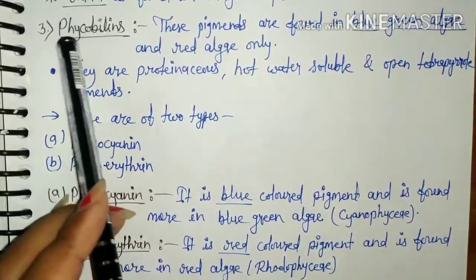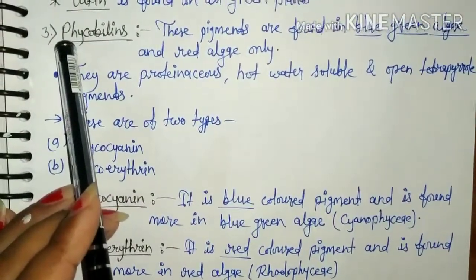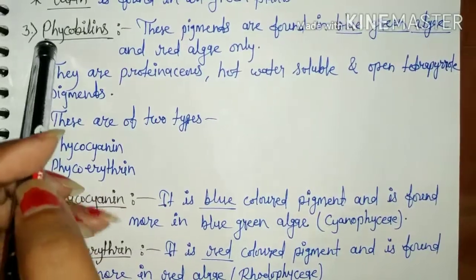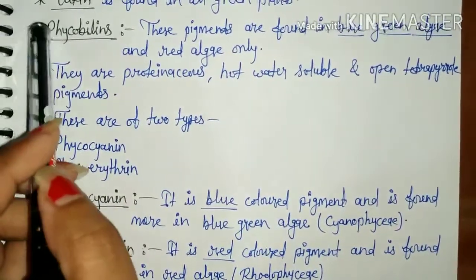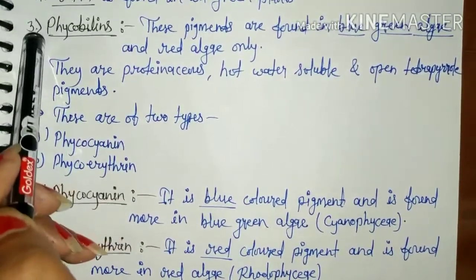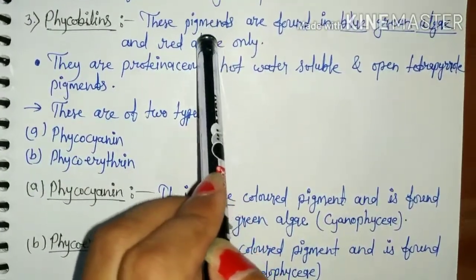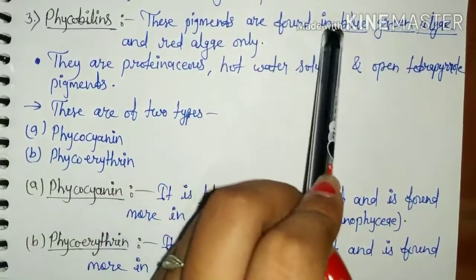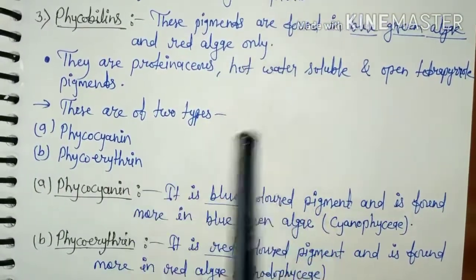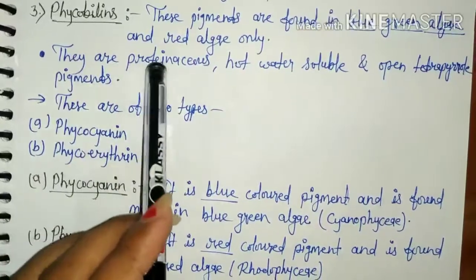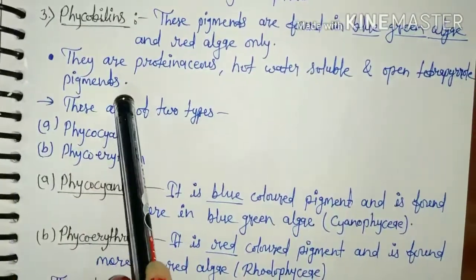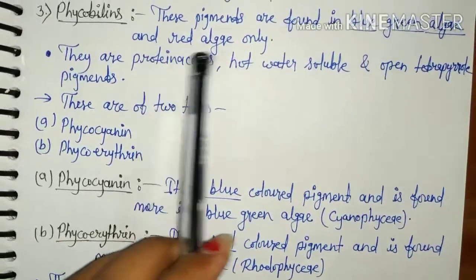The third group is phycobilins. Phycobilin pigments are found only in blue-green algae and red algae. They are protein-bound tetrapyrrole pigments, meaning they bind with protein.